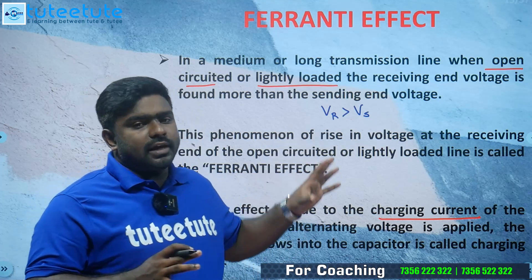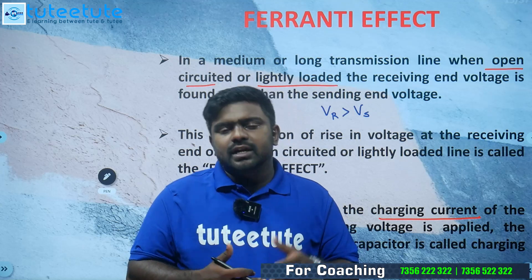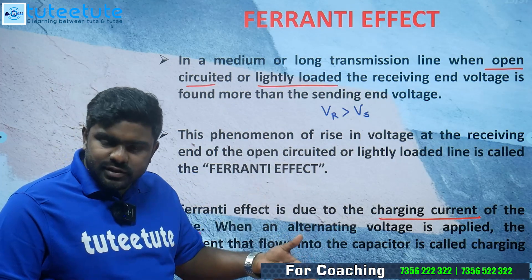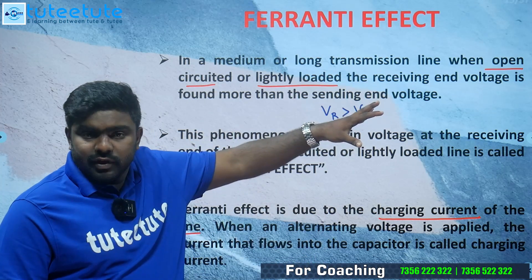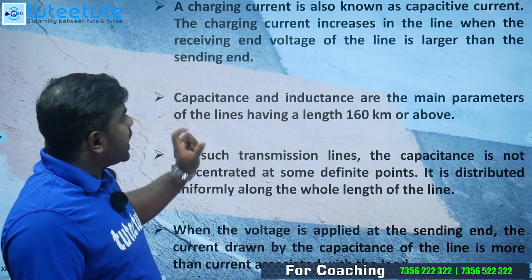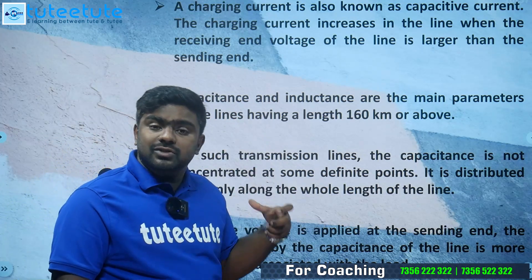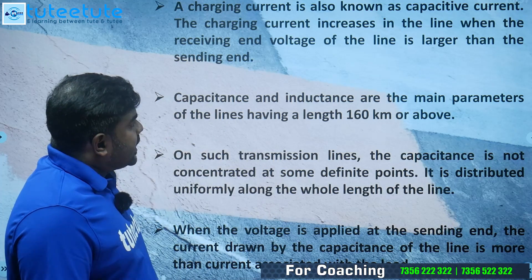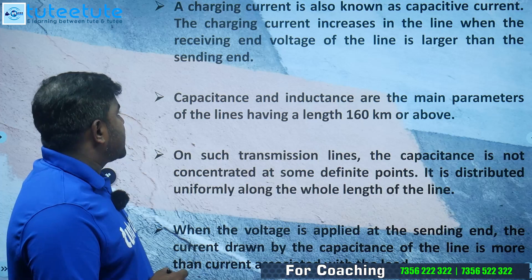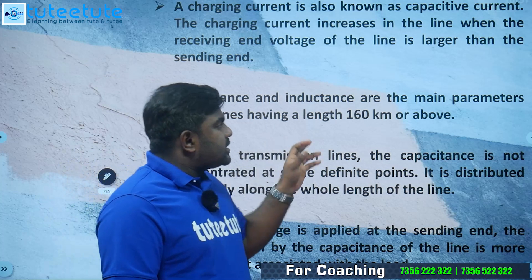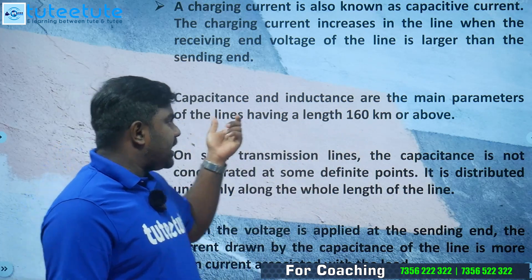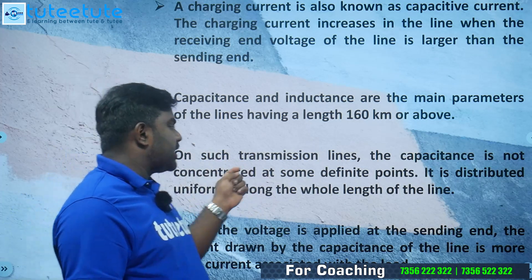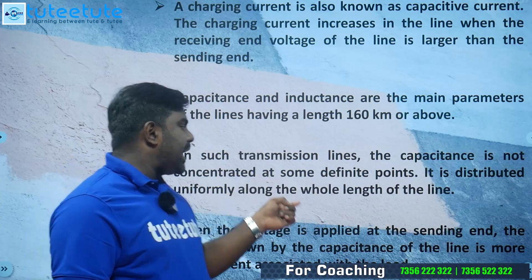We have a long transmission line with distributed parameters. That capacitor will draw some capacitive current. Due to this reason, the receiving end voltage exceeds the sending end voltage. This charging current is also known as capacitive current, because it is drawn by the capacitive element of the equivalent transmission line with distributed parameters. The capacitance and inductance are the major parameters of lines having a length of 160 km or above. On such transmission lines, the capacitance is not concentrated at definite points — it is distributed uniformly along the whole length of the line.